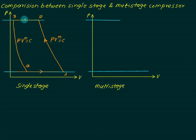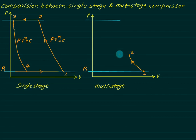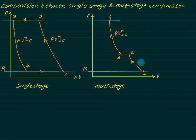For the single-stage compressor, the delivery pressure is P2 and suction pressure is P1. For the multi-stage compressor, suction pressure is P1 at point one. From one to two we have compression in the LP cylinder, two to three is intercooling — assuming perfect intercooling — and from three to four we have compression in the HP cylinder following the law PV^n = constant.